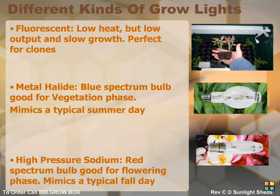Both metal halide and high pressure sodium lights are high intensity discharge, which means the light they produce has a good ability to penetrate plant leaves. Fluorescent light can grow plants indoors, but produces much smaller plants and is generally considered to be far inferior to both metal halide and high pressure sodium lights. The only advantage of fluorescents is that they produce less heat and are good for clones.